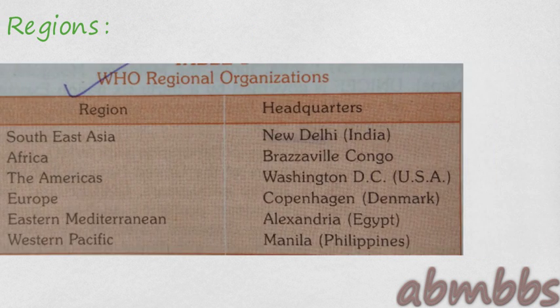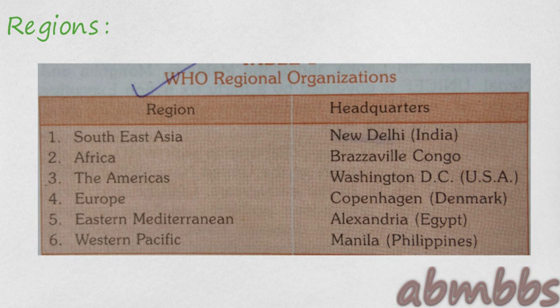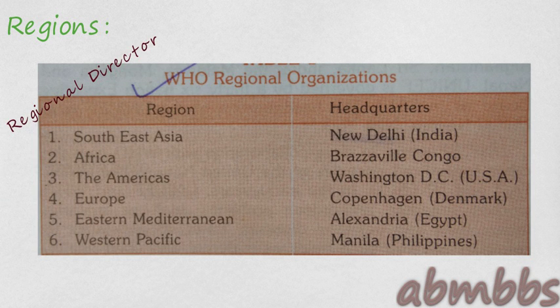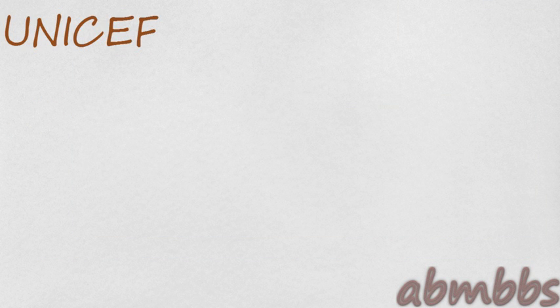The WHO is divided into six regions, each headed by a Regional Director. As you can see in the table, the headquarters of the Southeast Asia region is New Delhi. This brings us to the end of the topic. Now, for the sake of completion, we will discuss some other important world organizations.